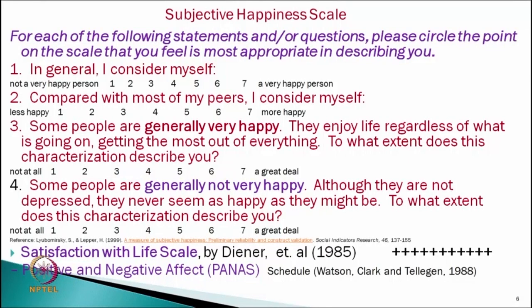For example, if the theoretical explanation of happiness is the overall view of our life, then questions like these would be appropriate: 'In general I consider myself not a very happy person [1] to a very happy person [7]'; 'Compared with most of my peers, I consider myself less happy [1] to more happy [7]'; 'Some people are generally very happy — they enjoy life regardless of what is going on, getting the most out of everything. To what extent does this characterization describe you? Not at all [1] to a great deal [7]'; and a fourth negative question: 'Some people are generally not very happy. Although they are not depressed, they never seem as happy as they might be.'